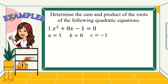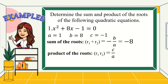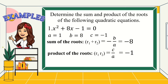Using the formula mentioned earlier, sum of the roots is equal to negative b over a. Substituting, we have negative 8 over 1, which equals negative 8. For the product of the roots, we have c over a. Substituting the values of c and a, we have negative 1 over 1, which equals negative 1. So the sum of the roots is negative 8 and the product of its roots is negative 1.